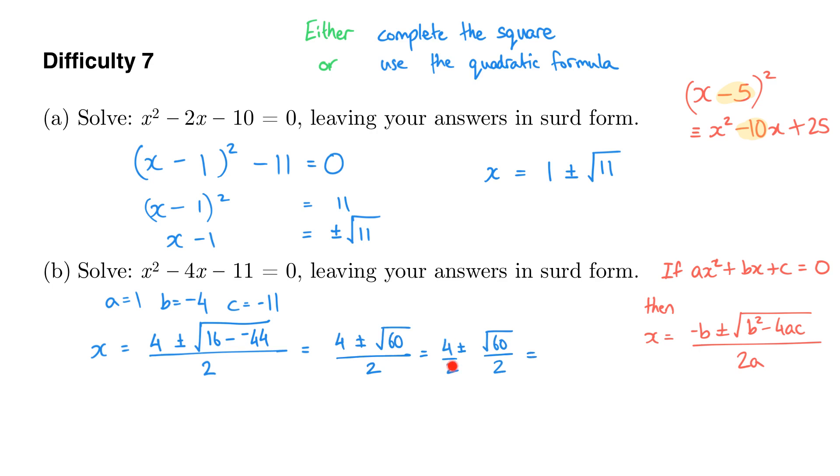And the square root of 60 is a surd that we can simplify. The biggest square number that goes into 60 is 4, so we can rewrite this as square root of 4 times the square root of 15. And that is the same as 2 root 15. So what we've actually got is 2 root 15 over 2. So that simplifies to just the square root of 15.